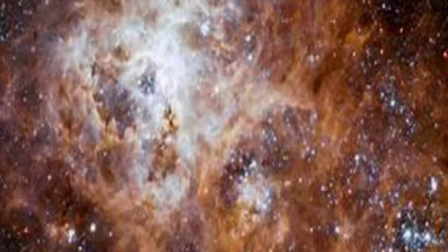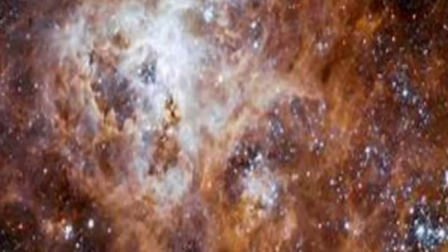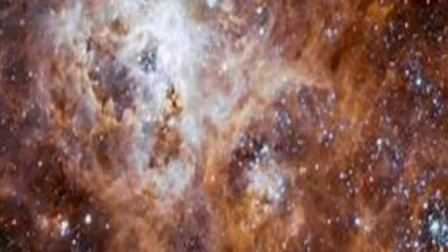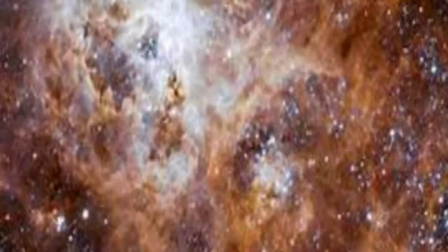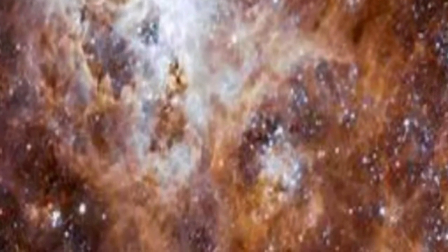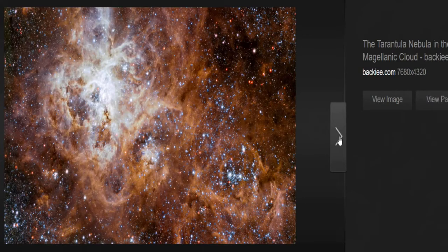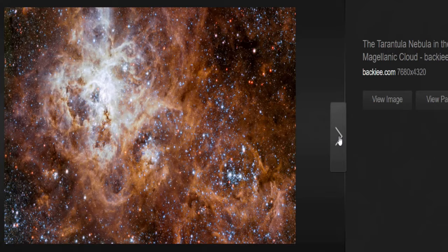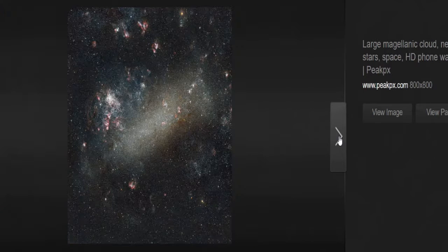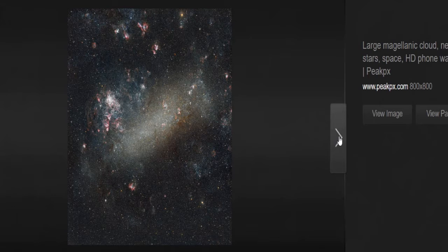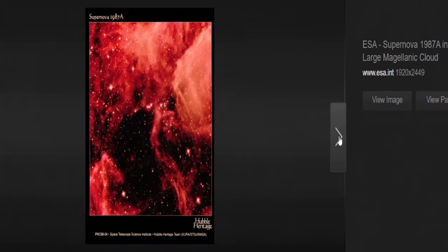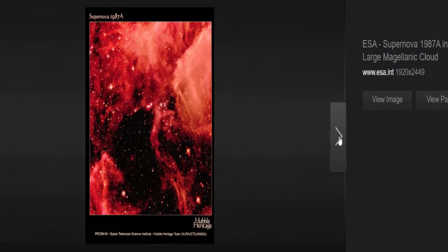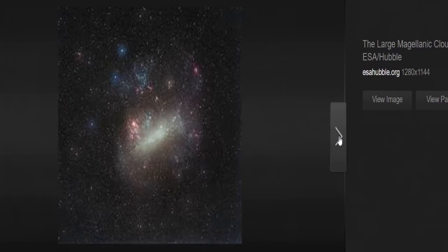The LMC is the second or third closest galaxy to the Milky Way after the Sagittarius dwarf Spheroidal and the possible dwarf irregular galaxy known as Canis Major over density. The diameter of the LMC is about 14,000 light-years, making it roughly one one-hundredth as massive as the Milky Way.